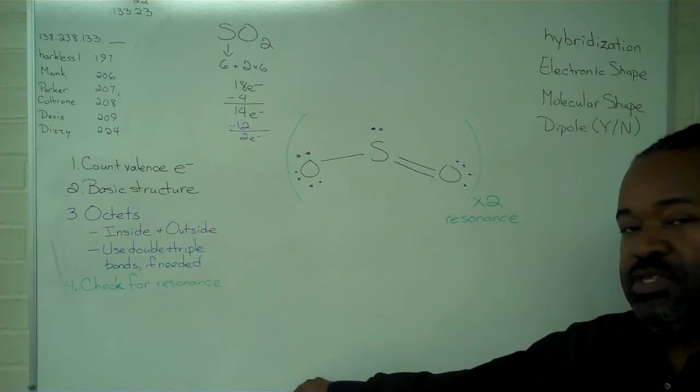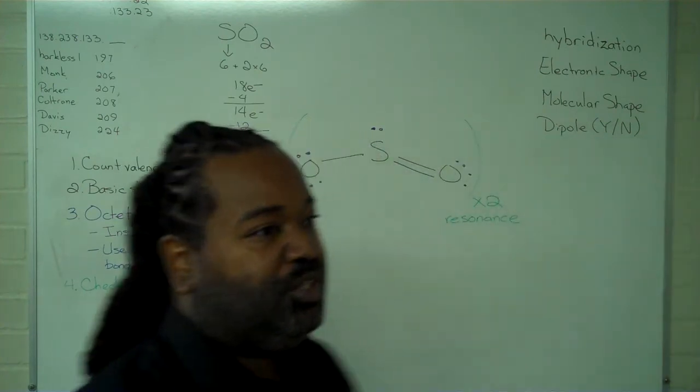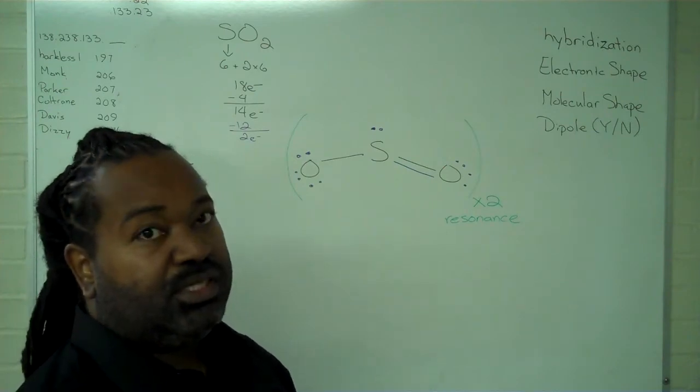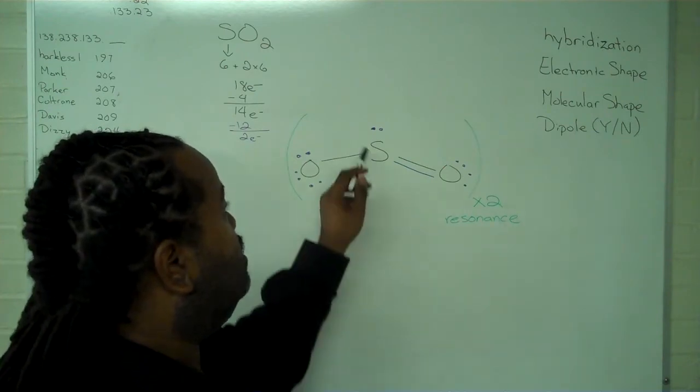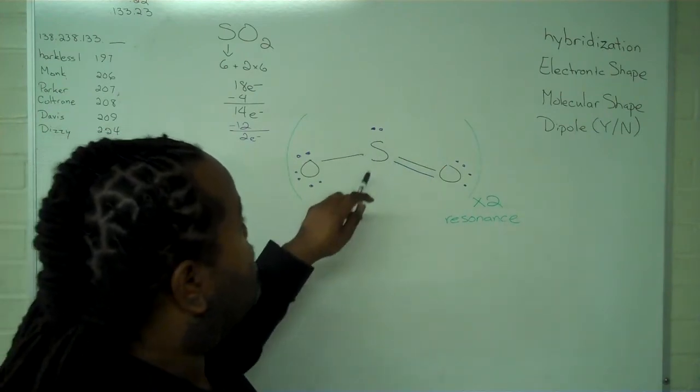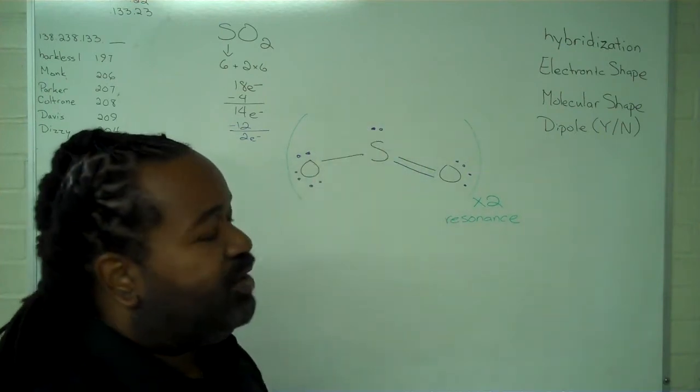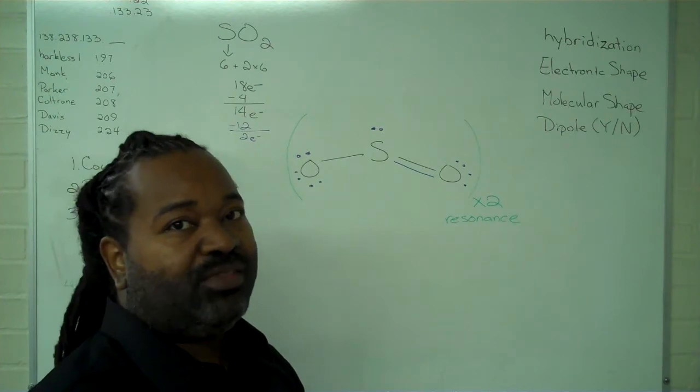For the VSEPR theory, we have to actually look at what we have here and apply that to the list of things that we want to determine. So we have 1 group, 2 groups, 3 groups. So we have 3 groups of electrons around that central atom.